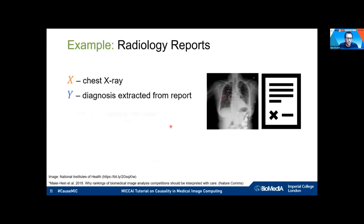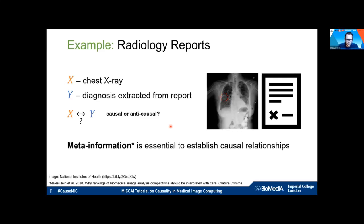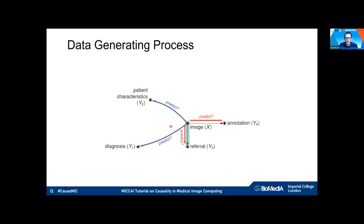Here's another example: radiology reports where the chest X-ray is the image and the diagnosis extracted from the report is the label. We are not sure about the causal relationship here. We are lacking important meta-information needed to establish it. The diagnosis could be directly derived from the image, but it might also come from a lab result independent of the image. That's why the relationship is unclear without additional domain knowledge.